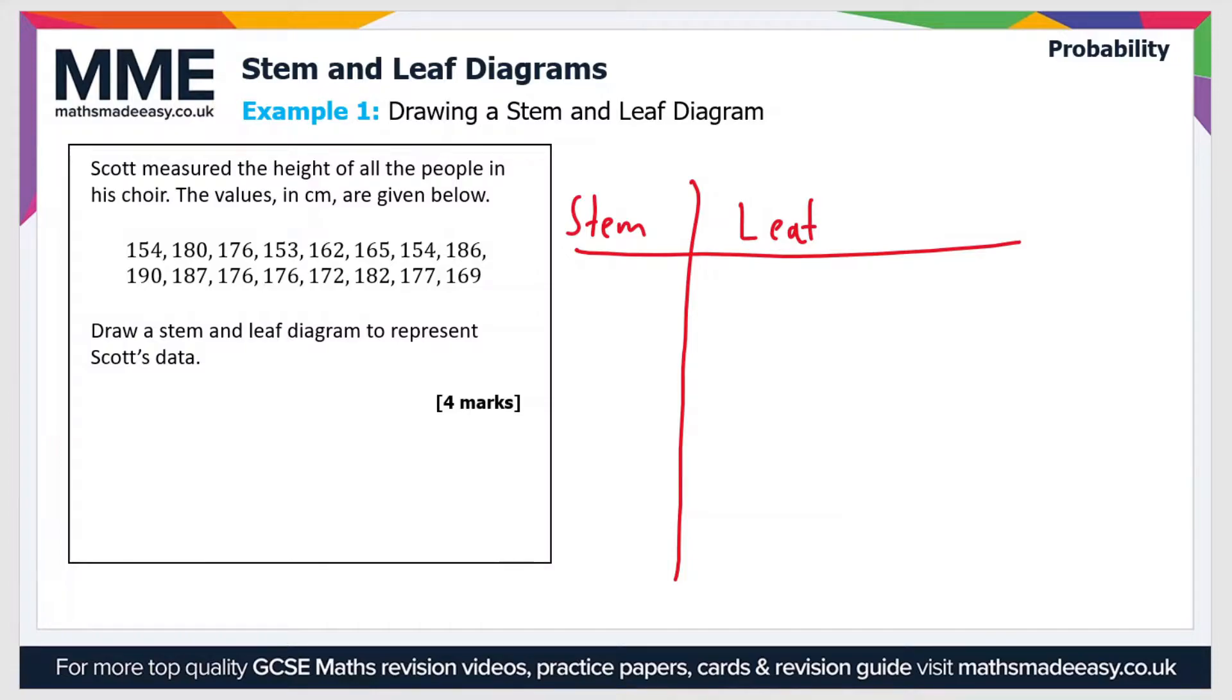So the next thing we have to do is go through each of the values and list them on the diagram. And the way we do that is as follows: we look for the smallest value first. So if we go through all of these numbers in the list of heights we can see that the smallest number is 153. So let's cross that off and we'll write 15 here and 3 on the right.